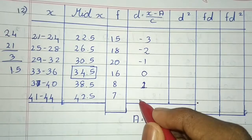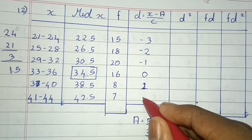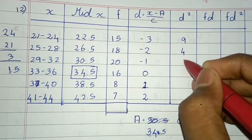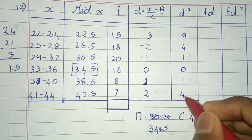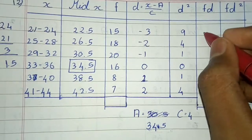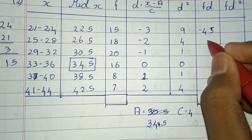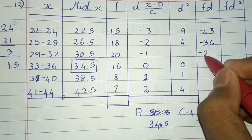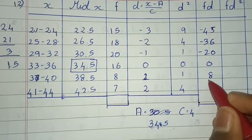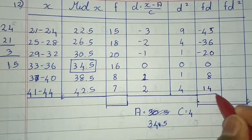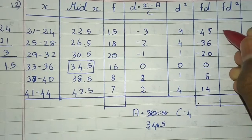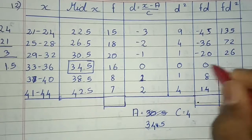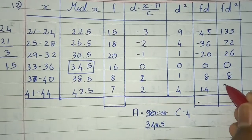42 equals 8, 8 equals 2. d² values: 9, 4, 1, 0, 1, 4. f into d: 15 into 3 minus 45, 45. 18 into 2 minus 36. 20 into 1 minus 20. 16 into 0 is 0. 18 into 1 is 80. 7 into 4 is 7. Row totals are 14. Adding the f·d² values: 135, add 72, 26, 0, 8, 26.